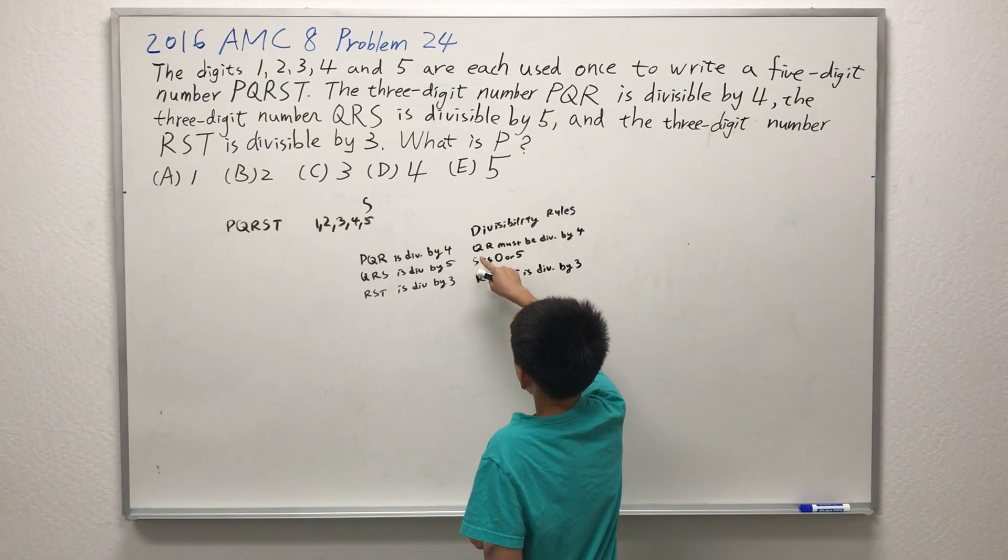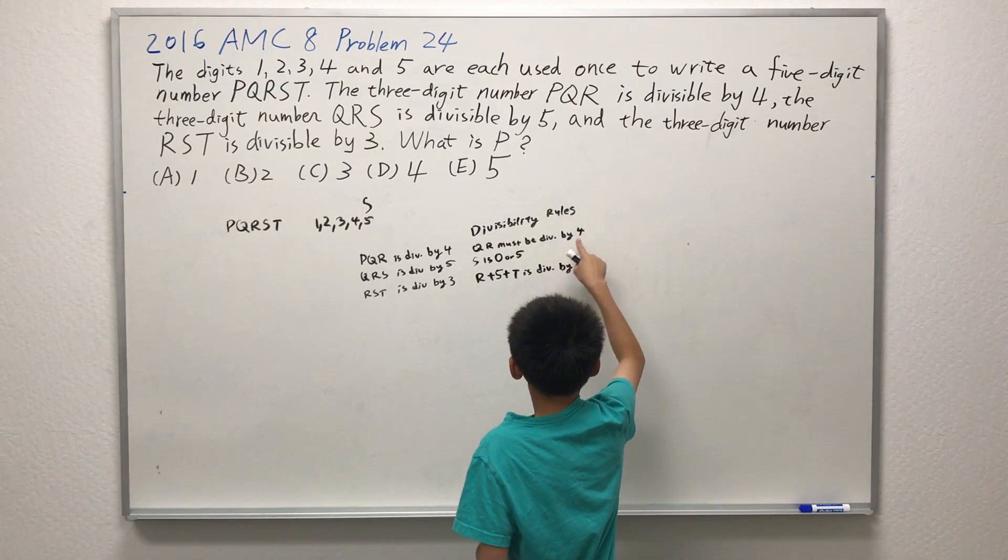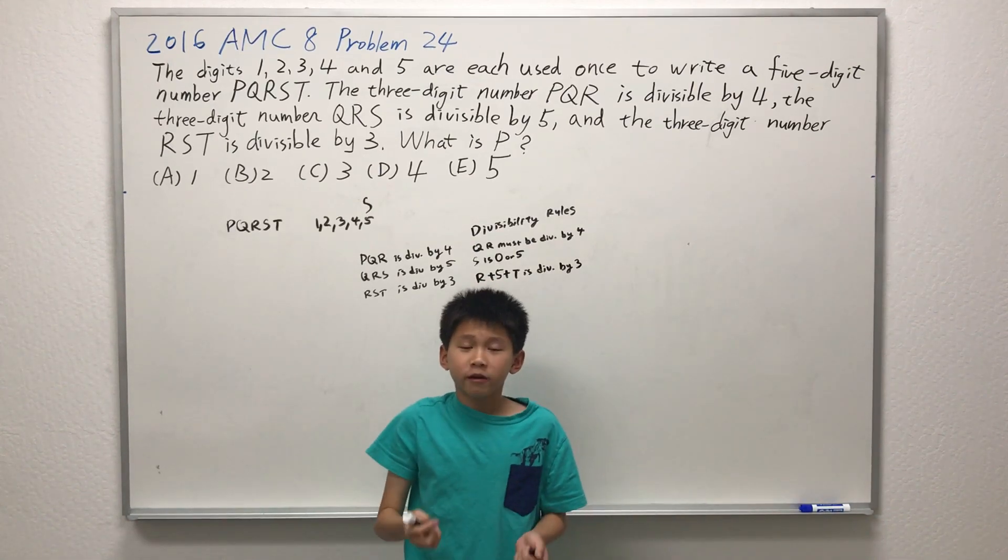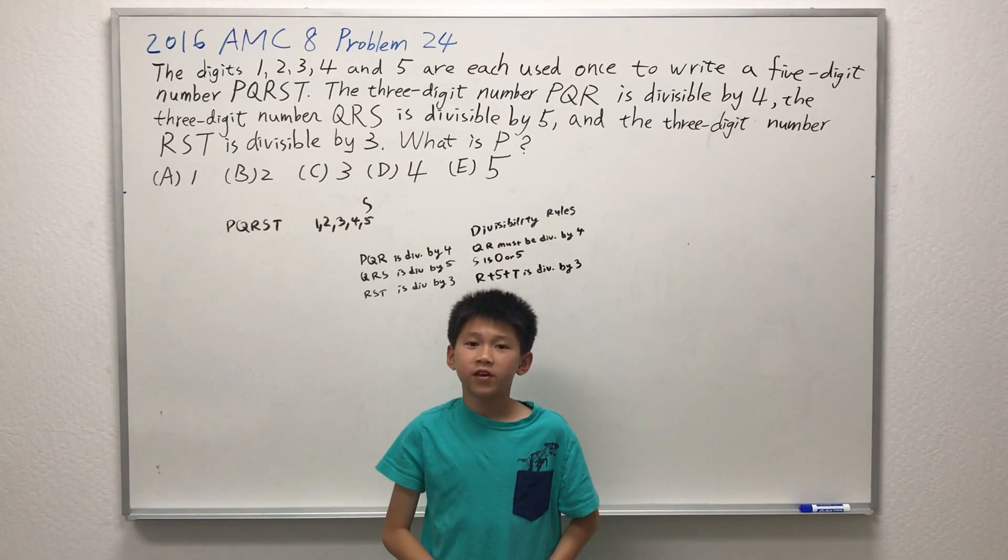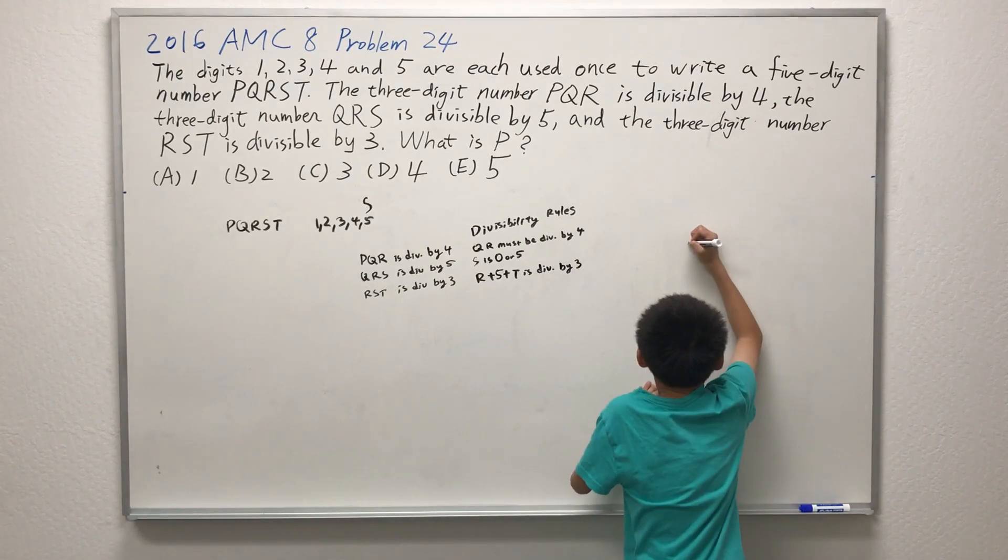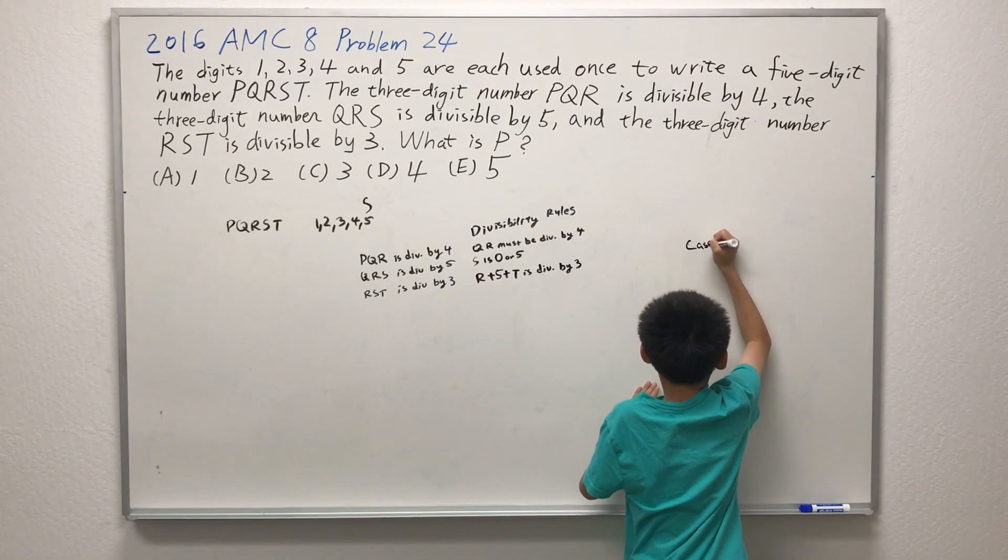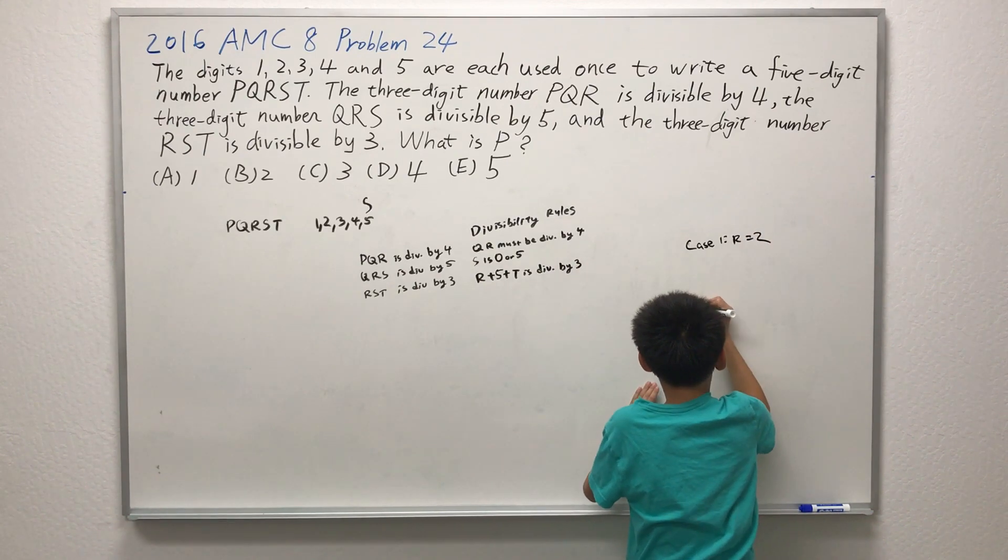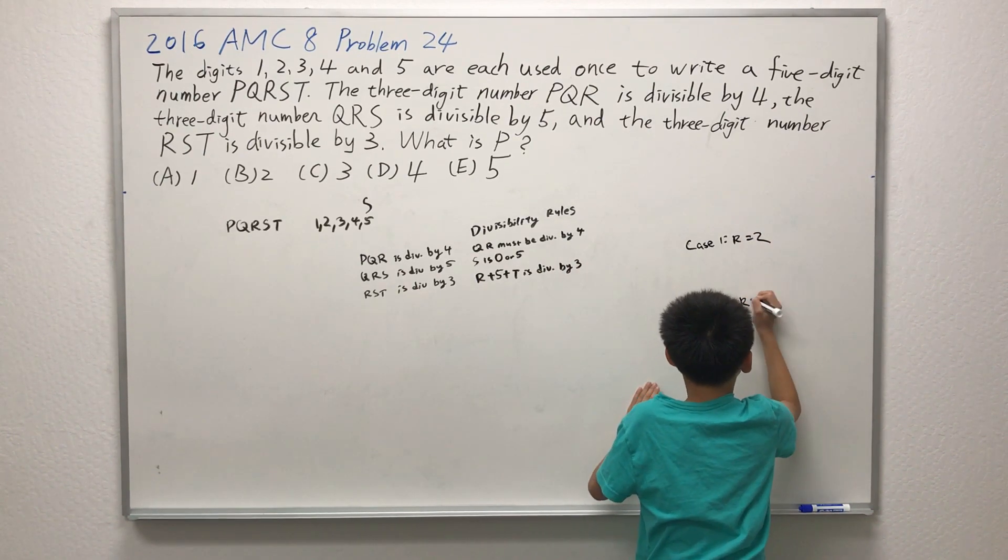In the first criteria, it says QR must be divisible by 4. If QR is divisible by 4, that means R has to be even. There are two cases for this. Case 1, R can equal 2. In case 2, R can equal 4.